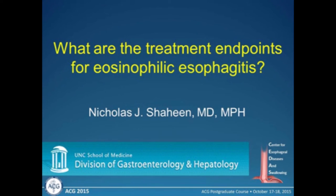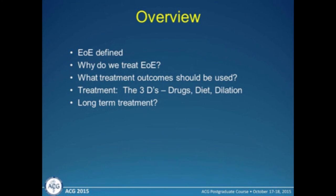My talk is treatment endpoints for eosinophilic esophagitis. What I'm hoping to do in the next few minutes is give you some very practical take-home data about how to take care of these patients, since this is a rapidly evolving area. I'm going to cover the definition you should now be using, why to treat and what treatment outcomes we're looking for, the three D's — drug, diet, and dilation — and finally long-term treatment. It's becoming increasingly clear that eosinophilic esophagitis is a chronic disease, and treating it just intermittently may not make the most sense.